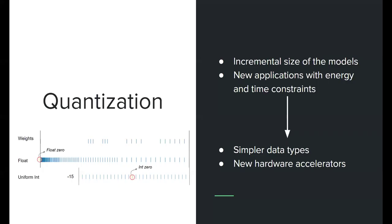Incrementing the size of neural networks has been accompanied by new applications with energy and time constraints. Due to this, there appears a need to use simpler data types and new hardware accelerators to execute these models in these applications, or to execute large language models — you need to compress the size a lot.